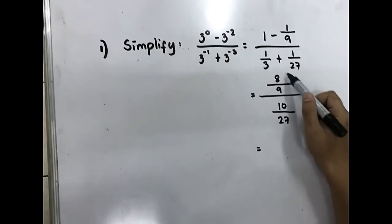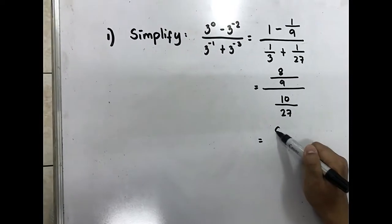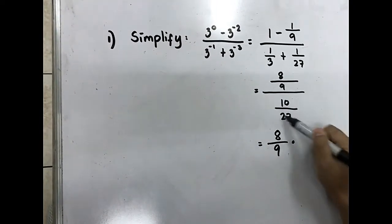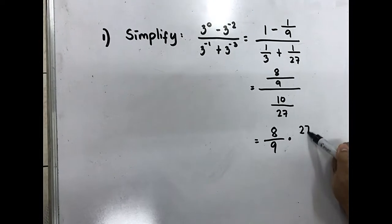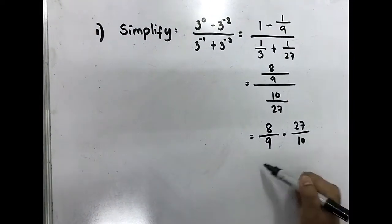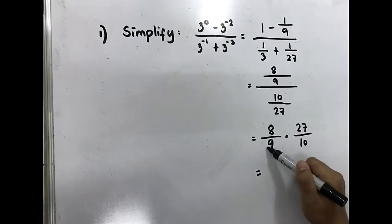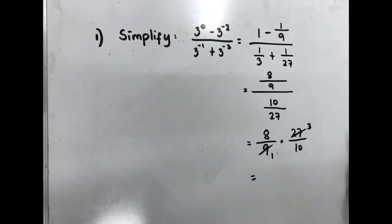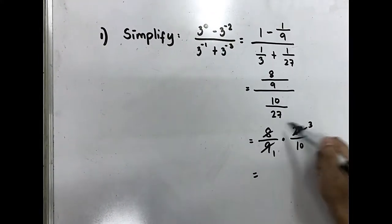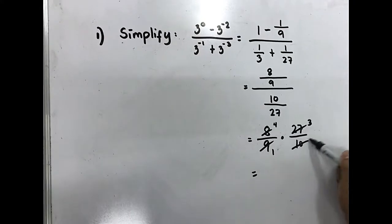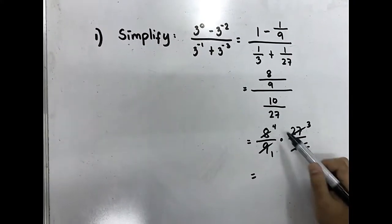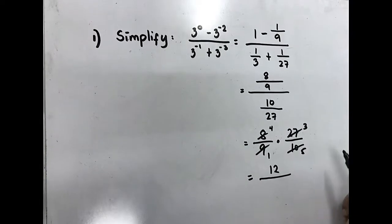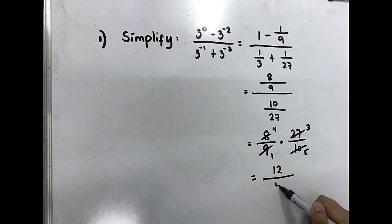We have fractions, so copy the numerator: 8 over 9, times the reciprocal of the denominator, 27 over 10. Divisible by 9: 1 and 3. Divisible by 2: 4 and 5. Multiply 4 times 3 equals 12, over 1 times 5 equals 5.